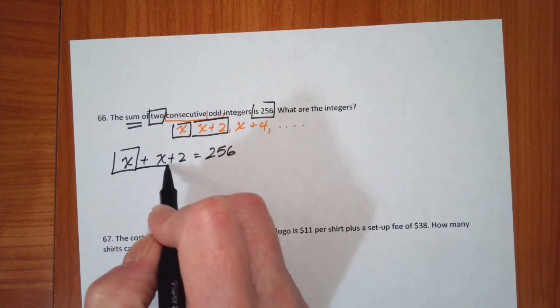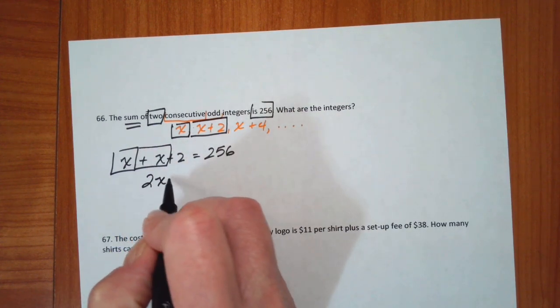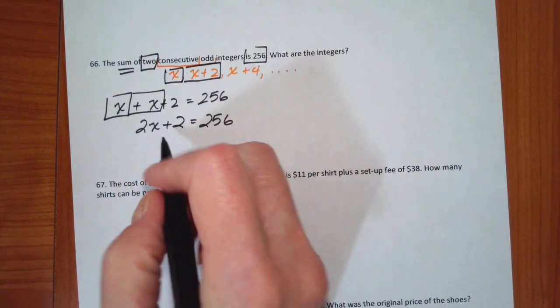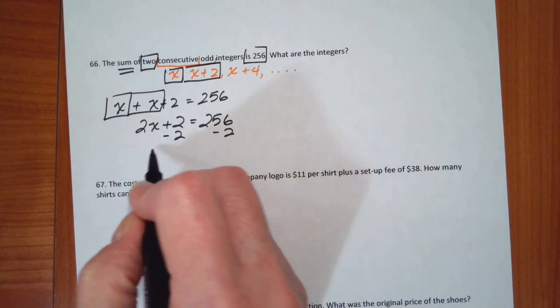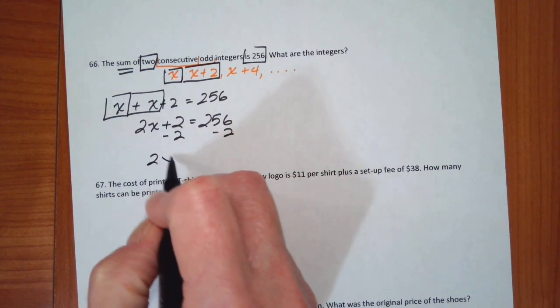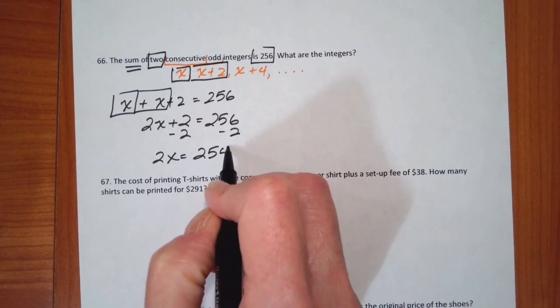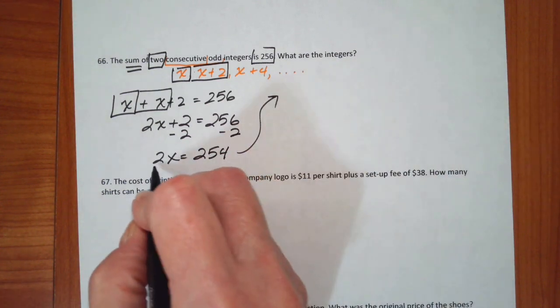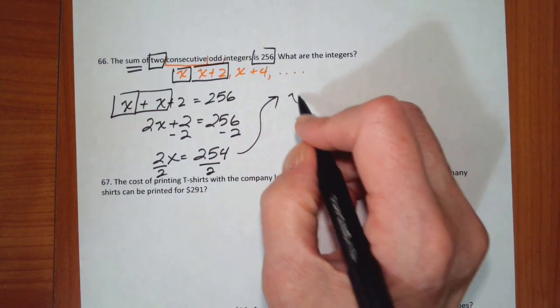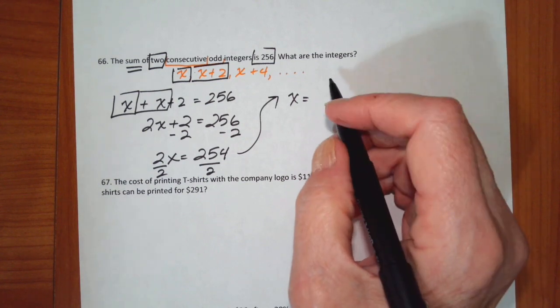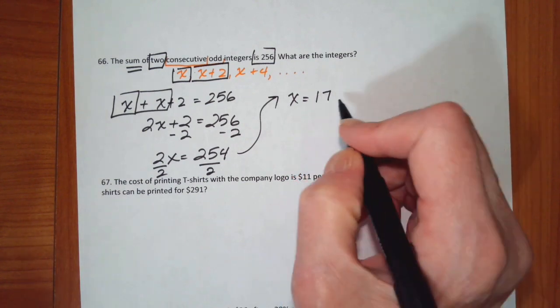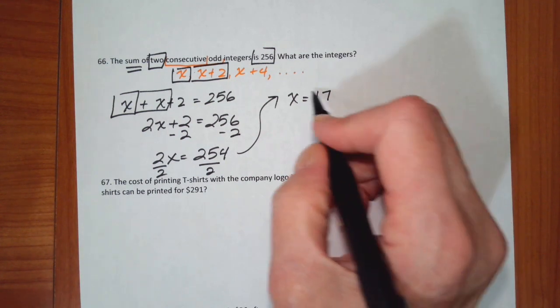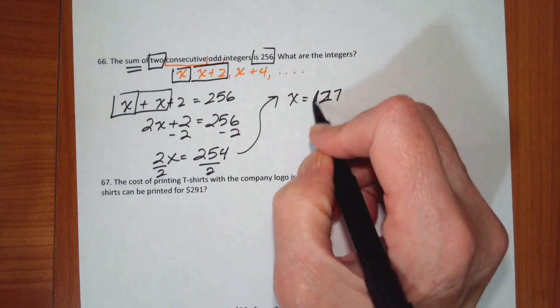All right. So I combine my like terms. I have an x. I have another x. So 2x plus 2 is equal to 256. Subtract 2 from both sides. I get 2x is equal to 254. When I divide by 2, I get that x is equal to 174. No, 176. No, no, no. 127. I've got my stuff all mixed up.